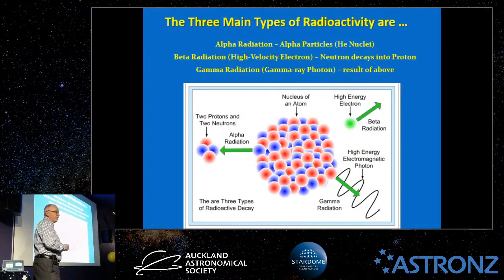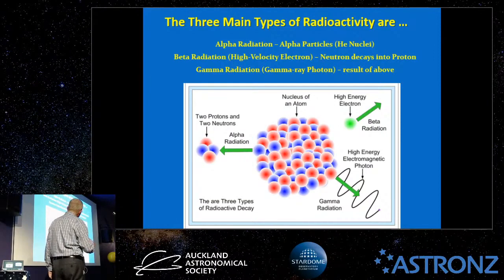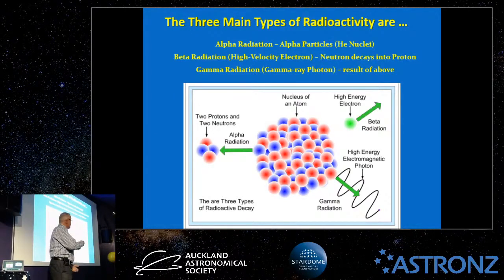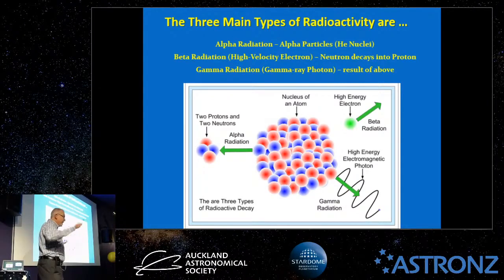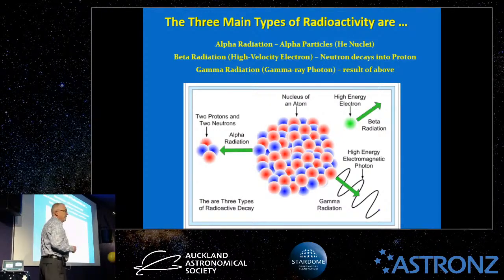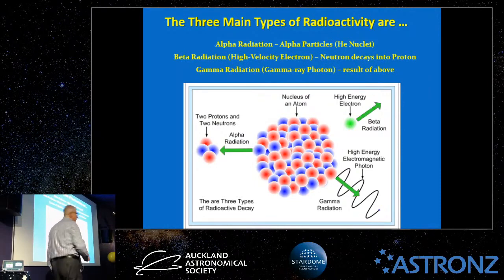Beta radiation is when a high-velocity electron is emitted from the nucleus. What happened inside is that the weak nuclear force allowed a neutron to decay into a proton, and an electron is emitted in the process. Since protons dictate what element you have, you've effectively created a new element — that's why radioactivity is so important in nucleosynthesis. Gamma radiation is a high-energy gamma-ray photon emitted when a nucleus that has undergone alpha or beta decay drops from a high-energy excited state to a lower state.